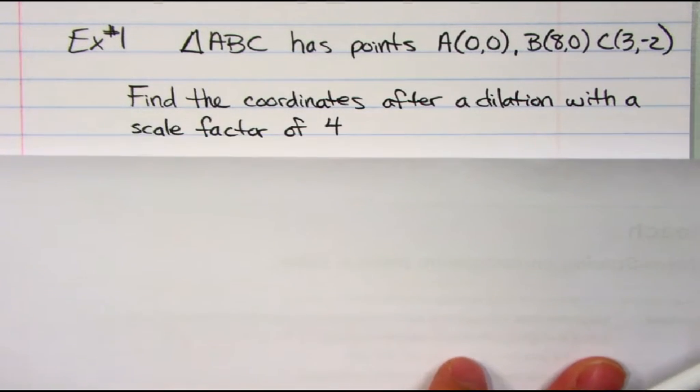Let's take this example. Triangle ABC has the points A, B, and C, given those points right there. And I want to find the coordinates after a dilation with a scale factor of 4. So 4 tells me, this is going to be an enlargement. It's going to get larger by a factor of 4. So this is what I do.